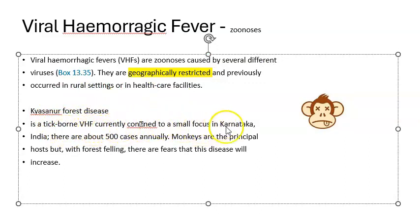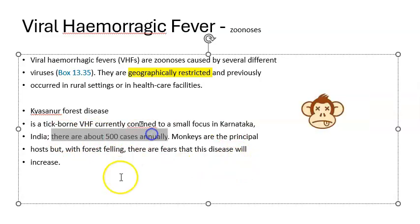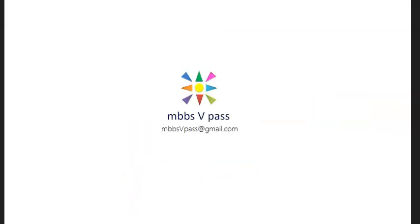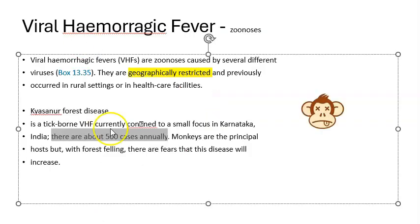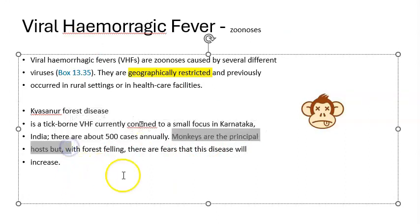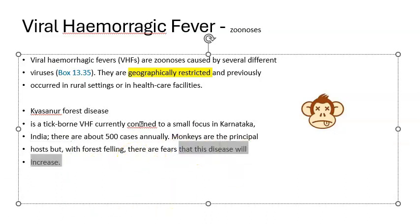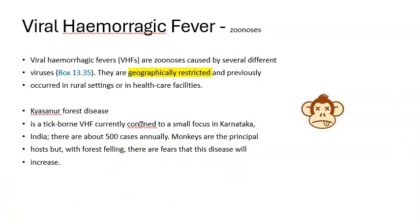KFD is currently confined to a small focus in South India — no longer just Karnataka, but the surrounding states as well. There are approximately 500 cases annually. The monkey is the principal host, and destruction of forests is causing increased human exposure, so cases are expected to rise.